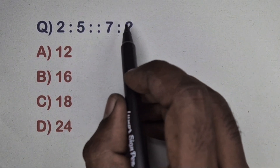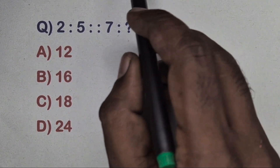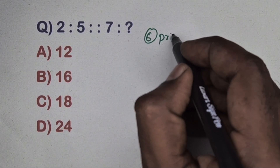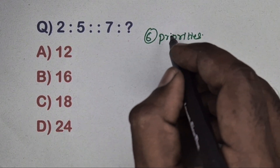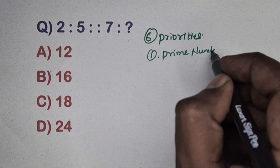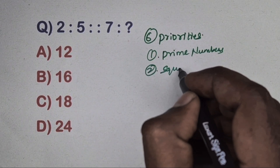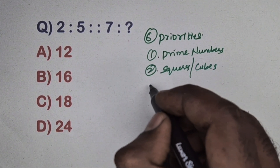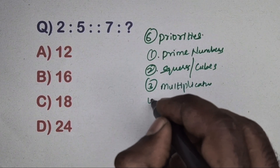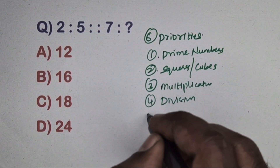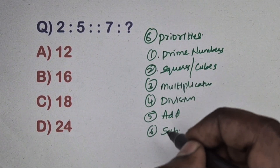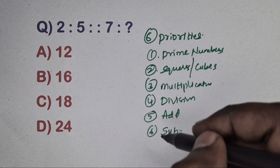In this video we have to solve all types of analogy questions. Watch the full video — don't skip. There are six priorities to solve any analogy question. First priority is prime numbers. Second is squares and cube relation. Third is multiplication relation. Fourth is division relation. Fifth is addition and sixth is subtraction.